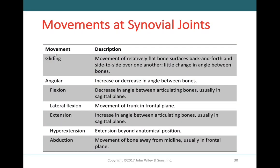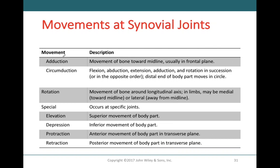In review, we have gliding movements, angular movements, rotational movements, and special movements. Gliding movements refer to flat surfaces on bones sliding past one another, often found in the wrist and ankle. Angular movements refer to either an increase or decrease in the angle between articulating bones. Flexion is a decrease in that angle; extension is an increase. Abduction moves something away from the midline; adduction moves something towards the midline — applicable to arms, legs, and hands. Circumduction refers to moving the distal end of a body part in a circle.